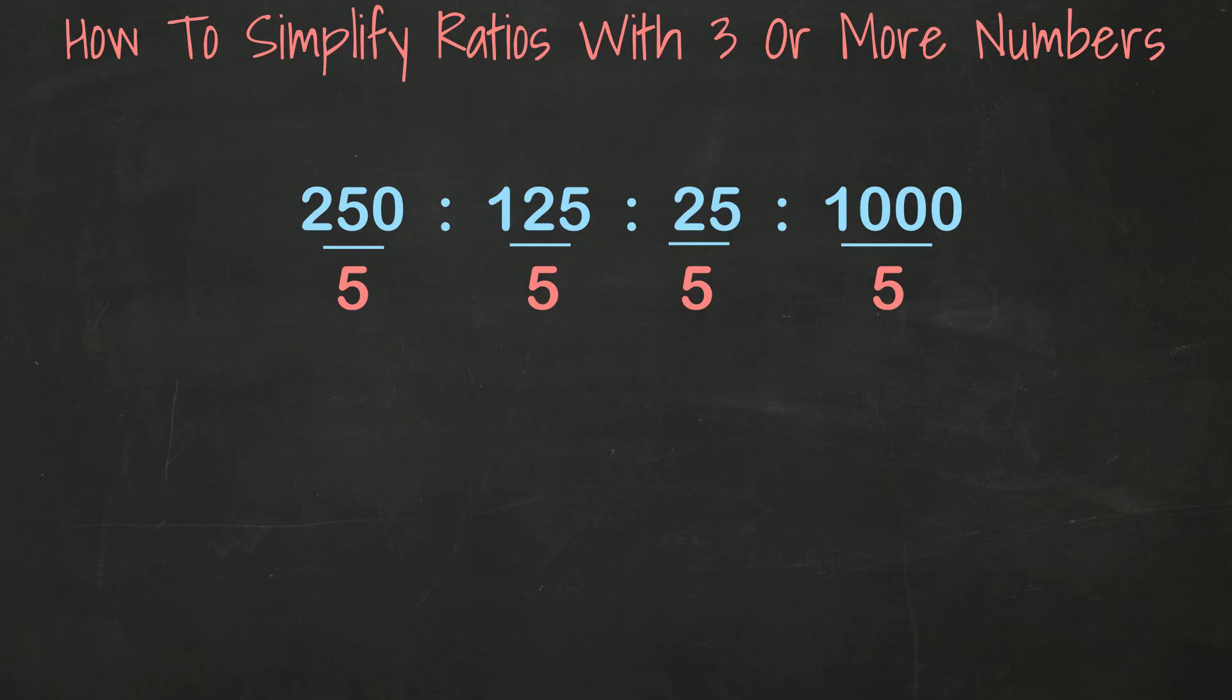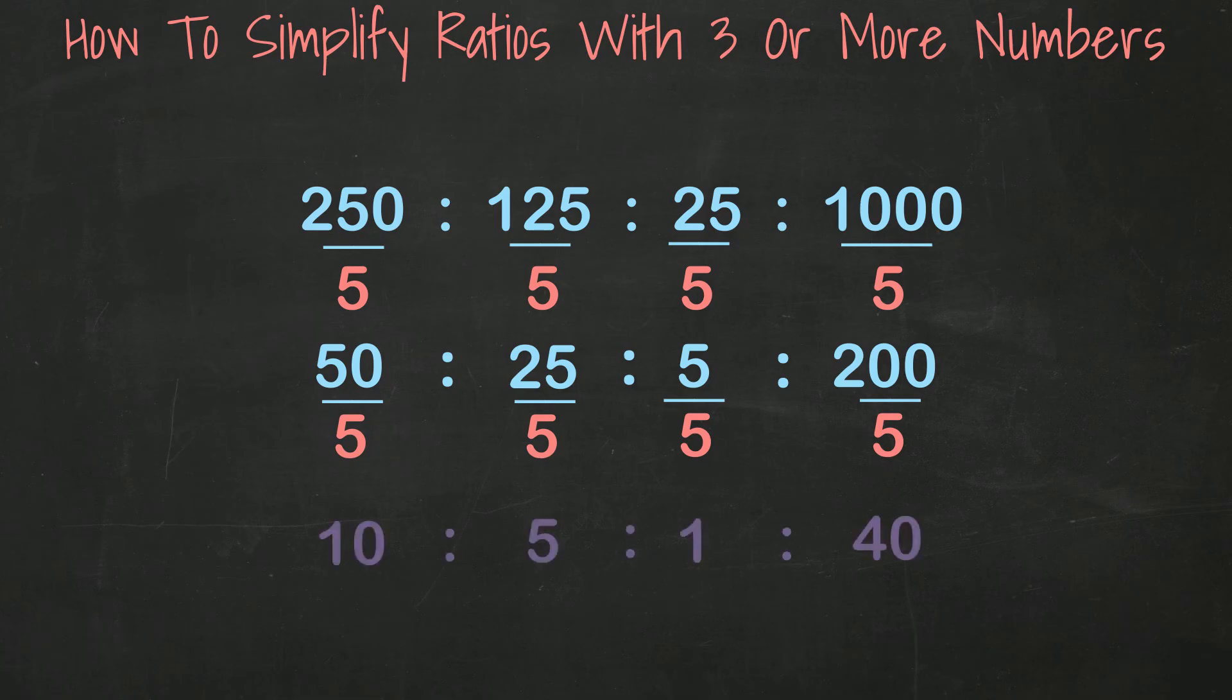We get a reduced ratio of 50 to 25 to 5 to 200. We can look at that again and see we can probably reduce it down one more time as they're all still divisible by 5. So let's divide by 5 again, and we get 10 to 5 to 1 to 40.